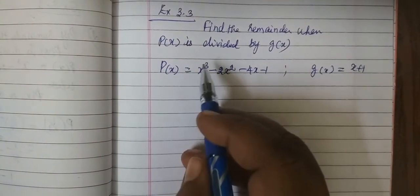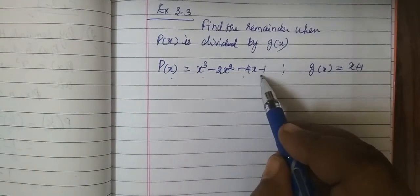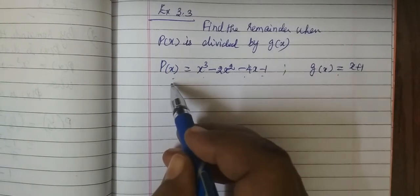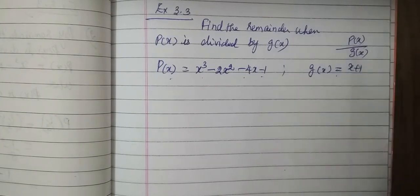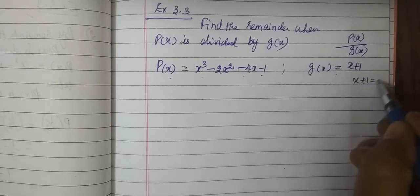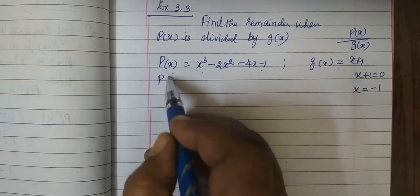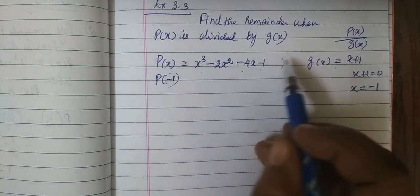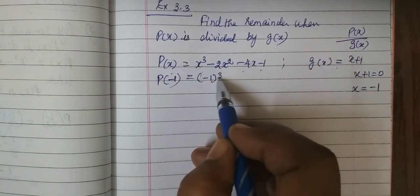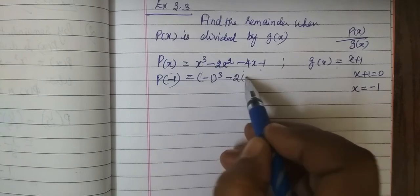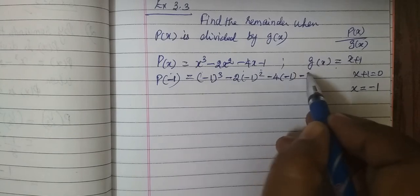Let us see the first question: find the remainder when p(x) is divided by g(x). Here p(x) is a given value, divided by g(x). We set x plus 1 equal to 0, so x equals minus 1. Then p(-1) equals: minus 2 times (minus 1) squared minus 4 times (x equals minus 1) minus 1.